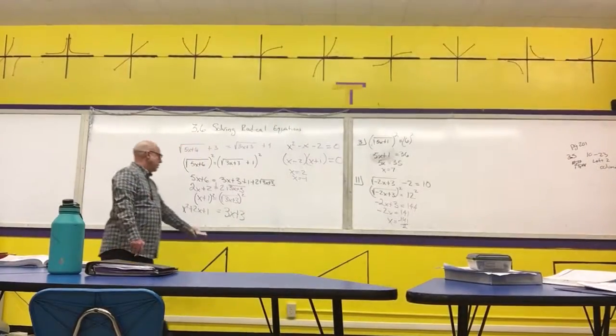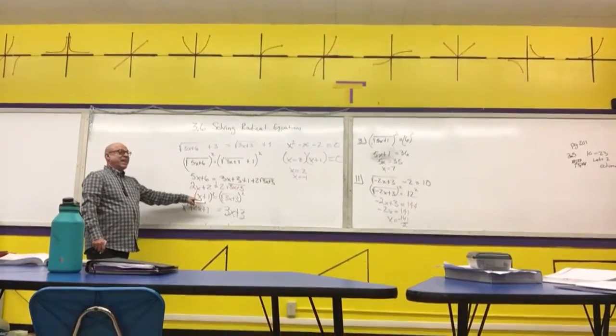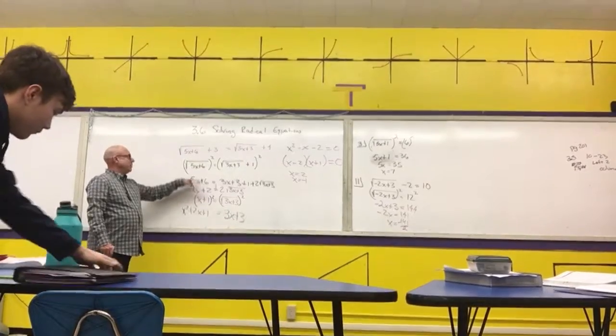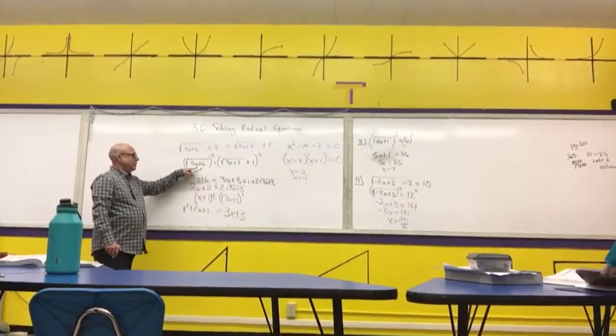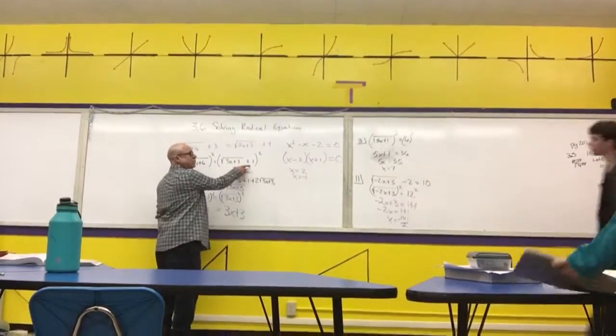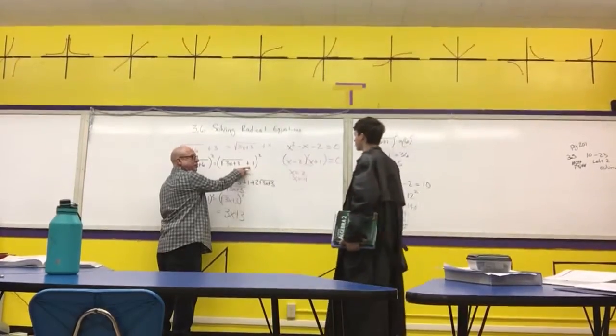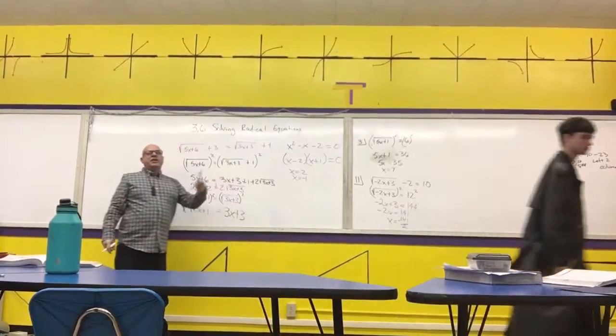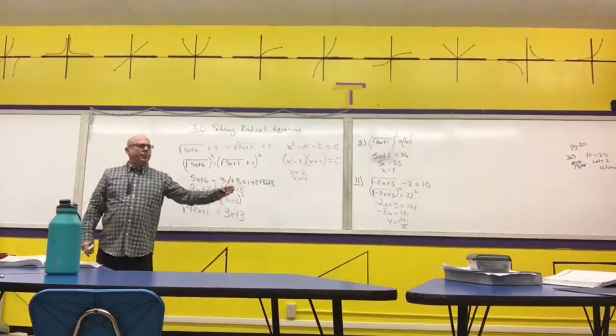So, I'm going to have x squared minus x minus 2 equals 0. I'm now going to solve that like chapter 1. I'm going to factor it. Two numbers that multiply to negative 2 that add to negative 1. Negative 2 and positive 1. So, x is equal to 2. And x is equal to negative 1. Make sure you're not going to get a negative number in here, which you won't on those.